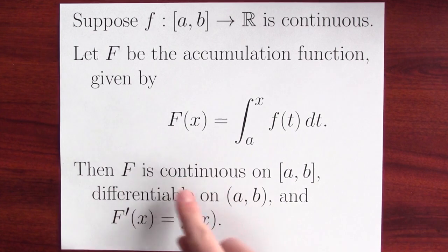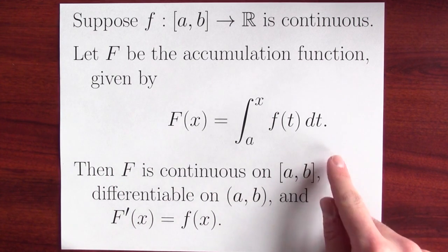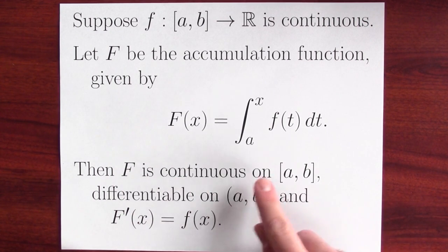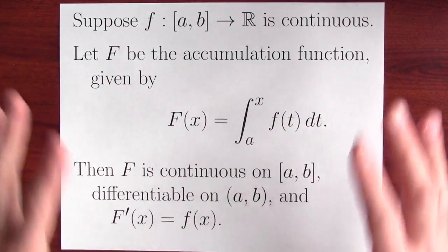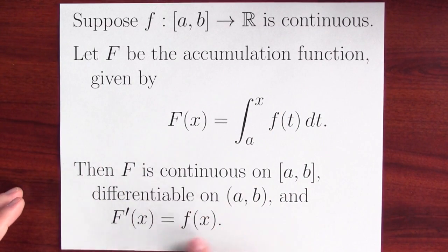Well then, the function big F turns out to be continuous on the closed interval [a, b], differentiable on the open interval (a, b). And, and this is the big point, the derivative of big F is little f.